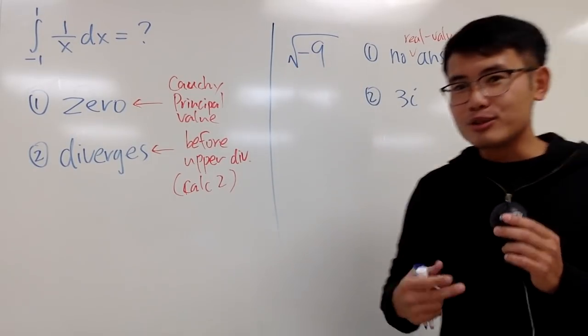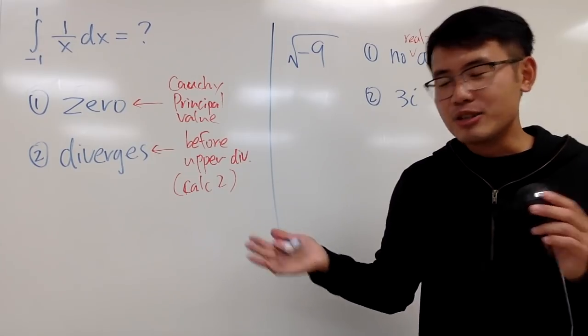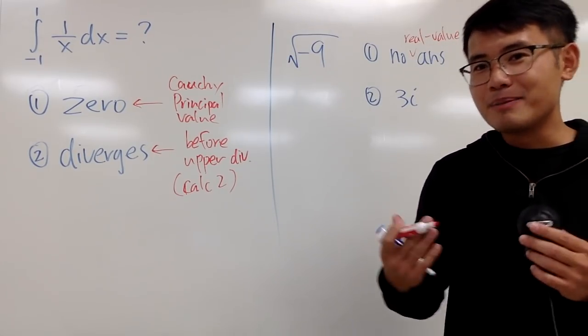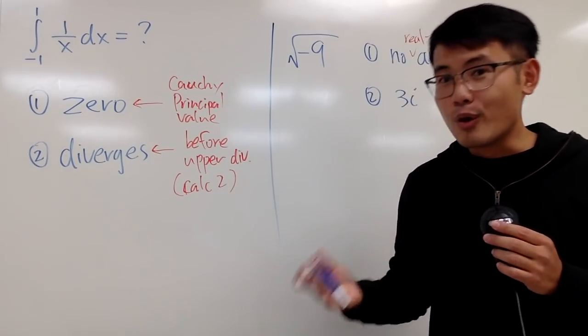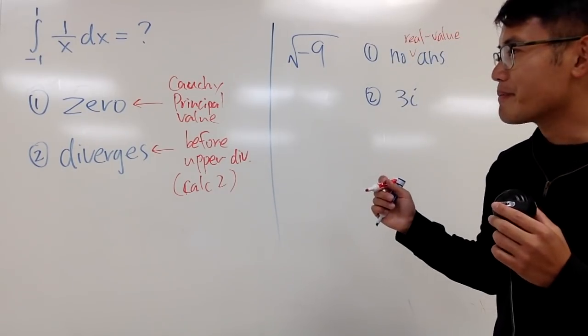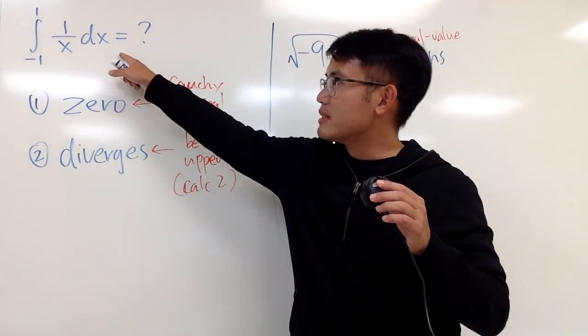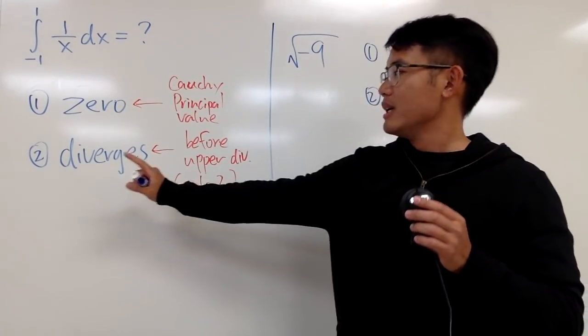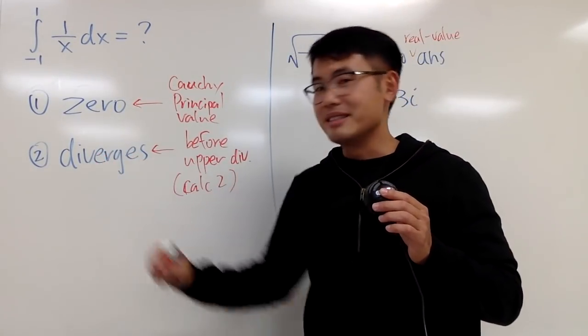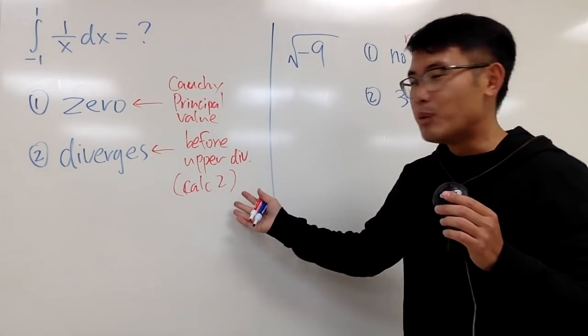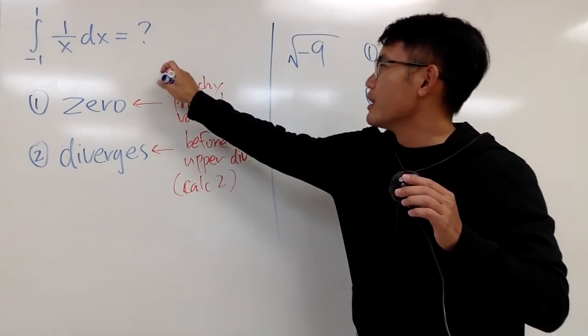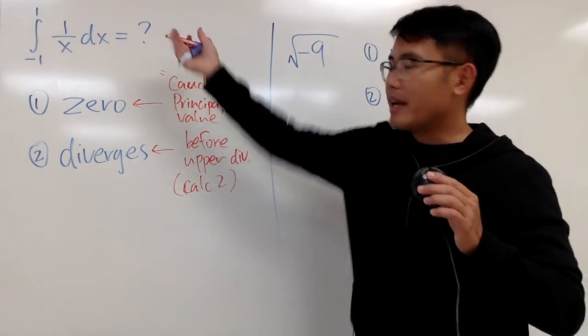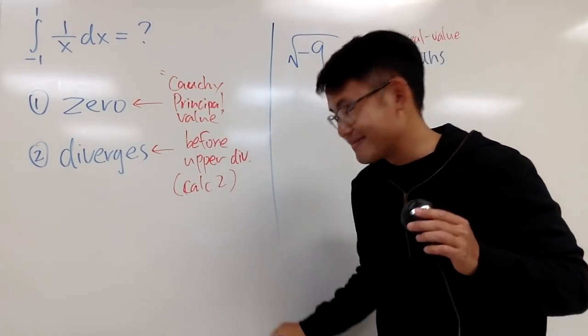So that's pretty much my answer to that. Hopefully, this clears some of the debate. But you guys can still leave a comment down below and let me know what you guys think. So for my students, when you see this kind of improper integrals, you should answer it as divergent and move on. And later, you guys can legitimately say this is 0, but you should also quote that the Cauchy principal value of the integral is 0. That's it.